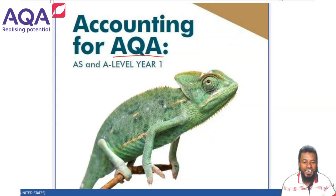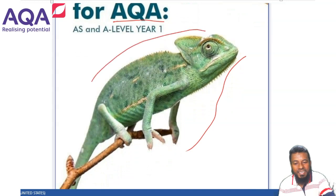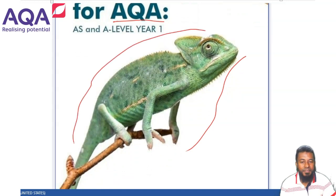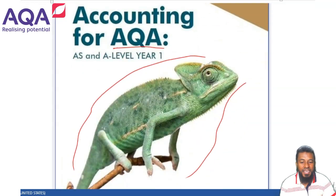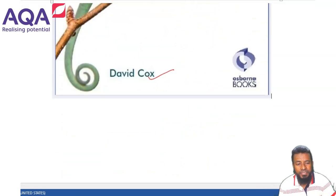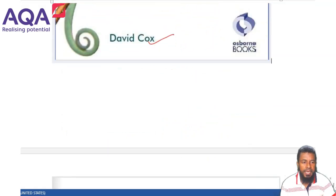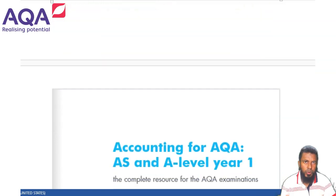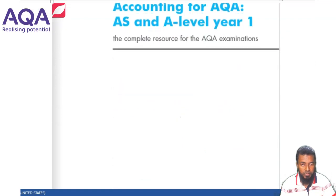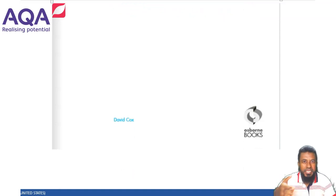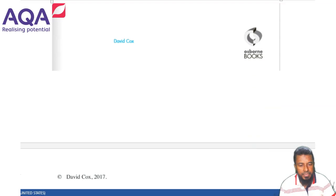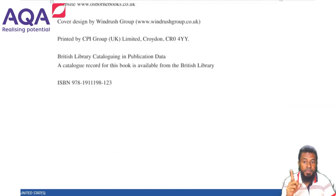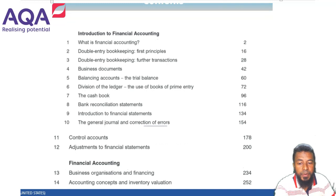You already know this picture — this is your textbook, the first page from the AQA Osborne Books, written by David Cox. It's a good book and is heavily followed all over the UK. Almost all sixth forms and colleges follow this particular book. It's for AQA but is also relevant for Cambridge, Edexcel, OCR, and other boards, though this particular video is especially for AQA students.